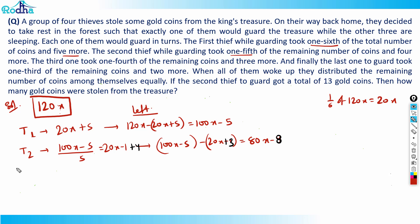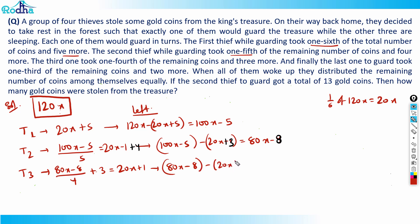The third thief took one fourth of the remaining coins and three more. One fourth of (80x − 8) is 20x − 2. Adding the three more gives 20x − 2 + 3 = 20x + 1. So out of 80x − 8 he took away 20x + 1, leaving 60x − 9.